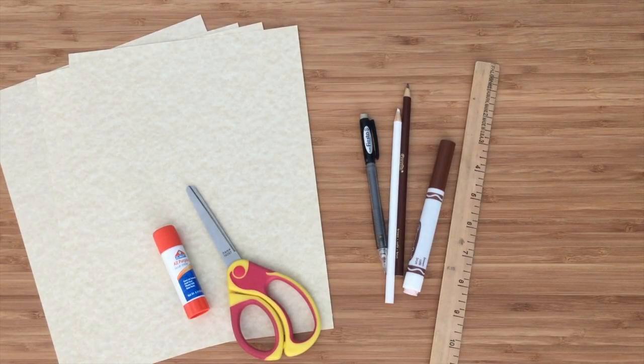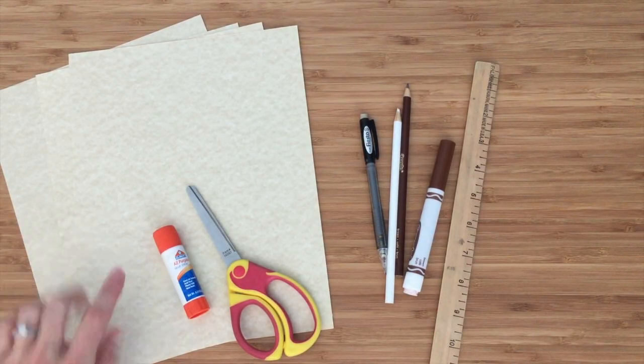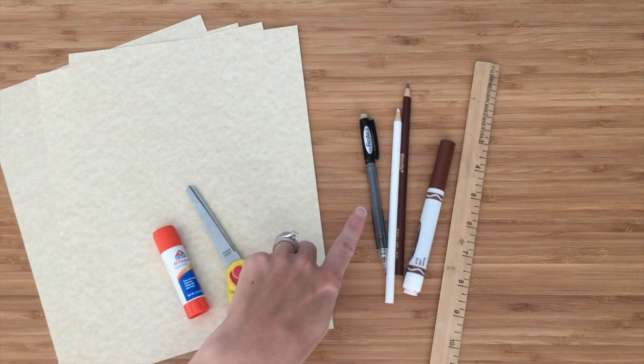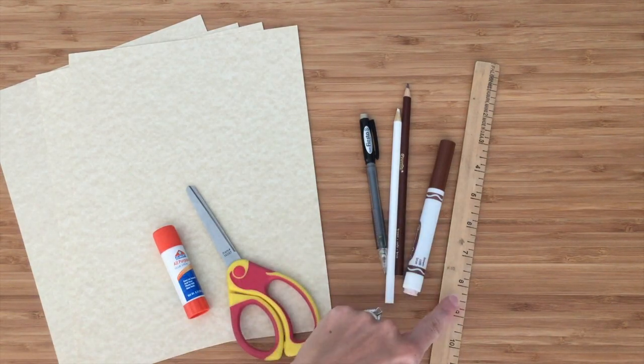To make the Great Pyramid of Giza, you'll need four sheets of paper, scissors, and glue. You may also want a pencil, something to color with, and a ruler.